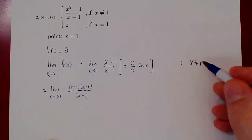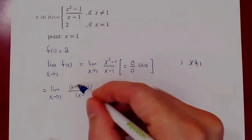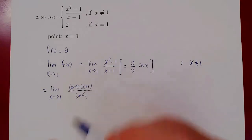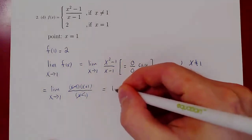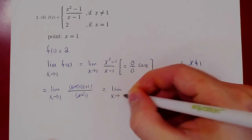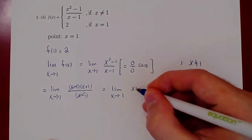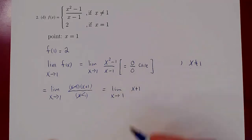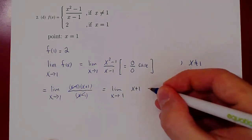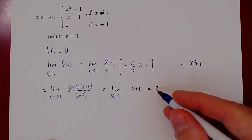Now, because x is not equal to 1, x - 1 is not 0, so we can cancel and we're left with a very simple limit: what happens to (x + 1) as x approaches 1? Well, as x approaches 1, x + 1 approaches 2. So the limit does exist and is equal to 2.